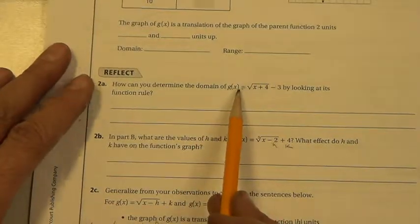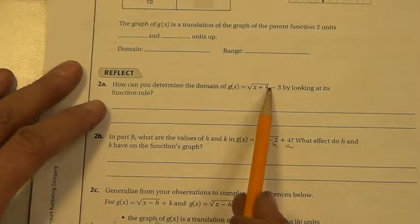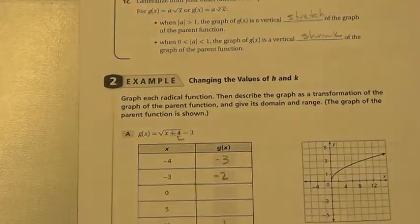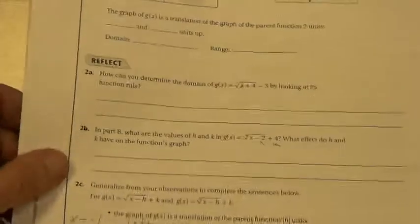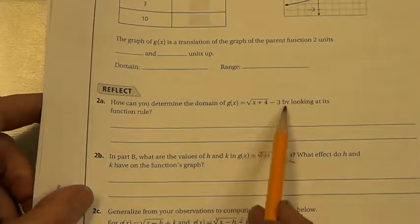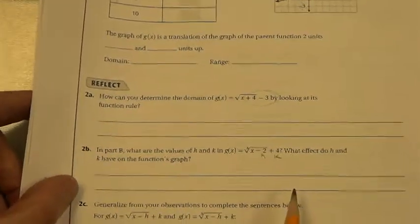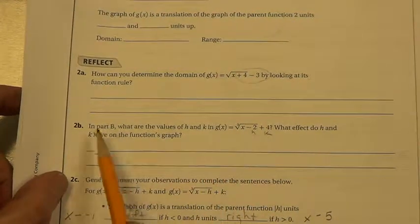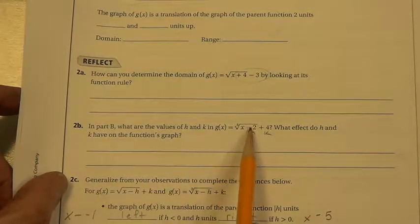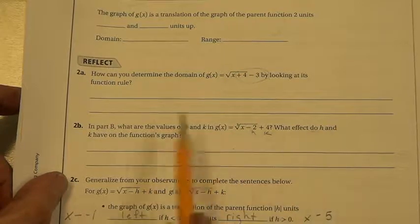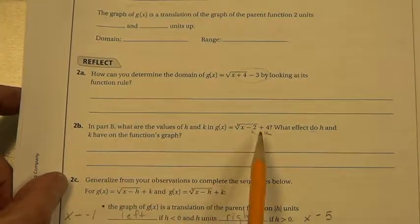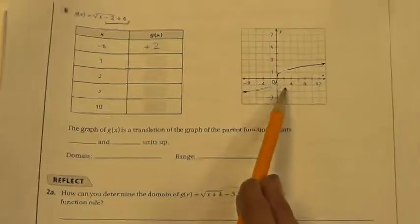How can you determine the domain of square root x plus 4 minus 3 by looking at its function rule? So you already figured out the domain and the range here. Look at what they are and compare them to just the rule. And see if you can figure out how to determine the domain and range by the rule. Come see me if you can. In Part B, what are the values of h and k in the cube root function? What effect do h and k have on the function's graph? So explain what happens with those h and k values in regards to this graph right here.